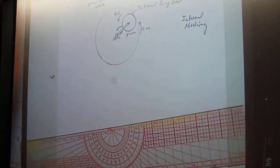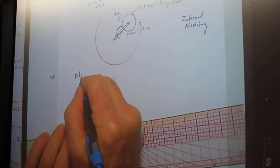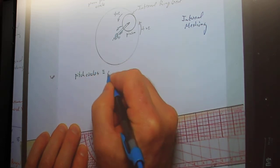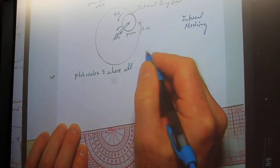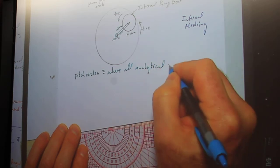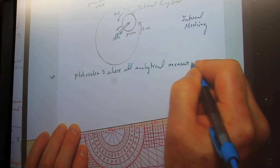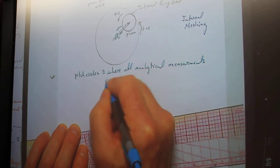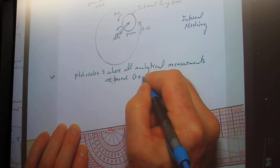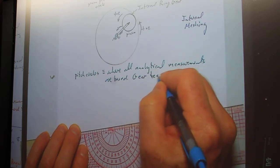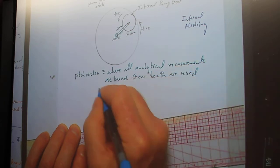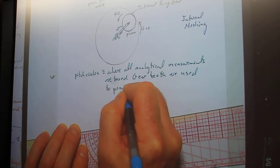Let me reemphasize that the pitch circles are where all analytical measurements are based. And gear teeth are used to prevent slipping.